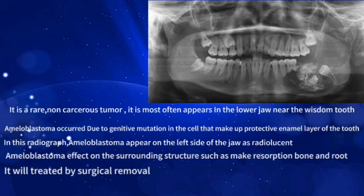Amyloplastoma is a rare non-cancerous tumour. It most often appears in the lower jaw near the wisdom tooth. Amyloplastoma occurs due to a genetic mutation in the cells that make the protective enamel layer of the tooth.